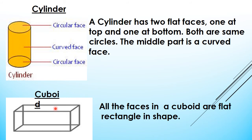Now, what is a cuboid? A cube was formed when you joined six squares together. Similarly, a cuboid is formed when you join six rectangles together. As you can see, this cuboid has a front face that is a rectangle, the back face is a rectangle, the top and bottom are rectangles, and the side faces are also rectangles. All the faces in a cuboid are flat and rectangle in shape.